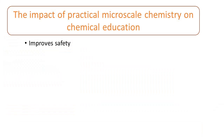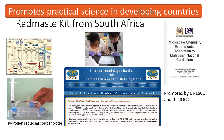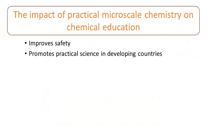I'm going to construct a whole series of impacts that I think microscale chemistry brings to practical chemistry. Here you see a picture of the RADMAS kit from South Africa developed by Professor John Bradley. It was designed to take chemistry to schools in South Africa where there were no laboratories. You can see the reduction of copper oxide with hydrogen in the bottom left hand corner. UNESCO saw an opportunity to expand the amount of practical chemistry in other parts of the world and they also developed microscale physics and science and primary science as well. So now I can add to safety that it promotes practical science in developing countries.